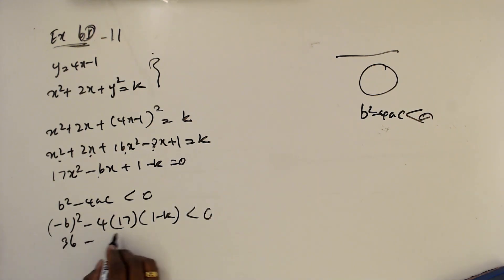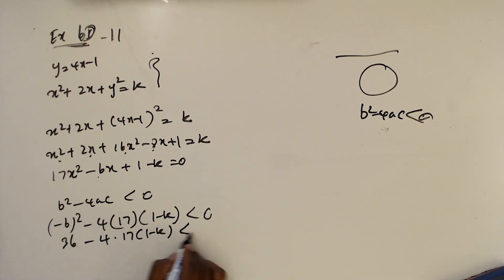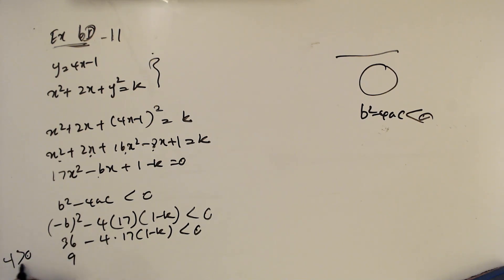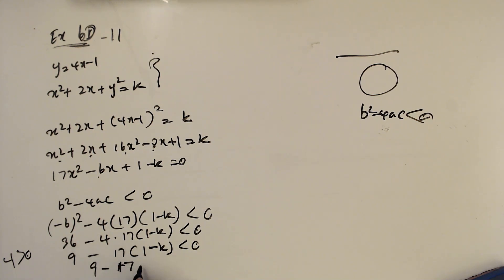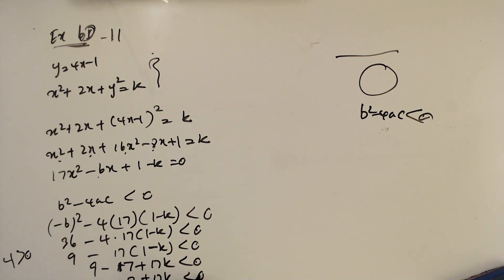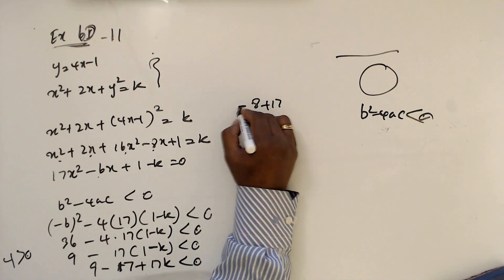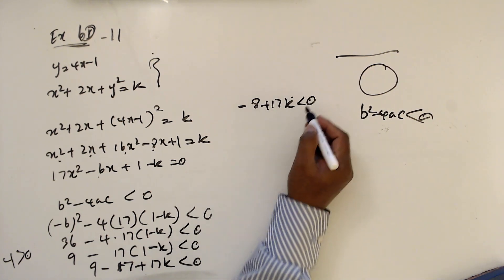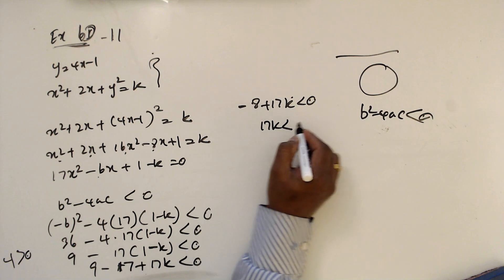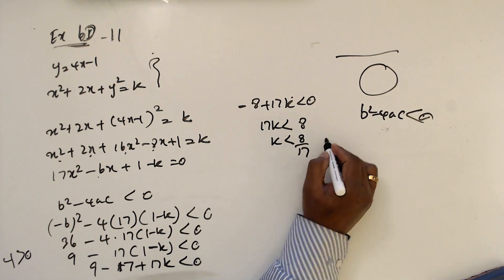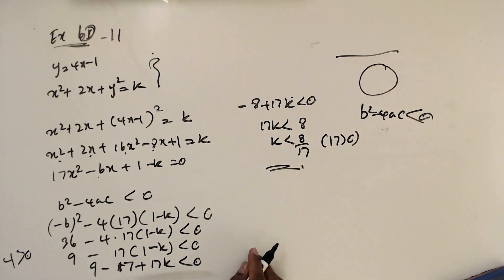So b² - 4ac < 0: (-6)² - 4(17)(1 - k) < 0. That is 36 - 68(1 - k) < 0. Dividing by 4: 9 - 17(1 - k) < 0, giving 9 - 17 + 17k < 0, so -8 + 17k < 0. Therefore 17k < 8, so k < 8/17.